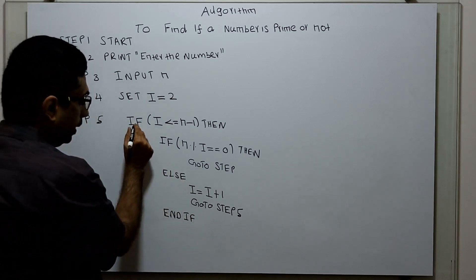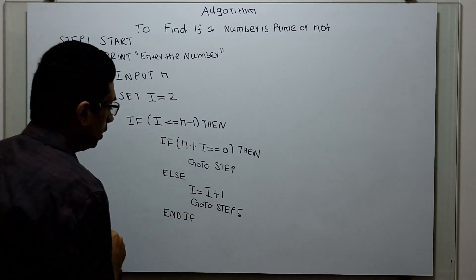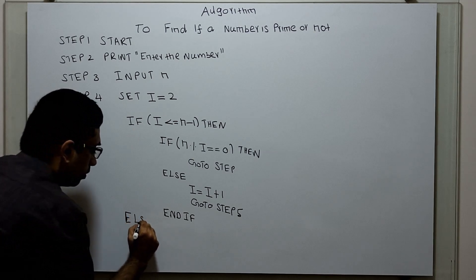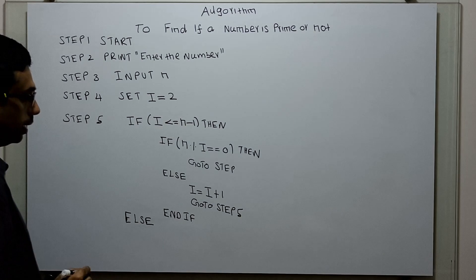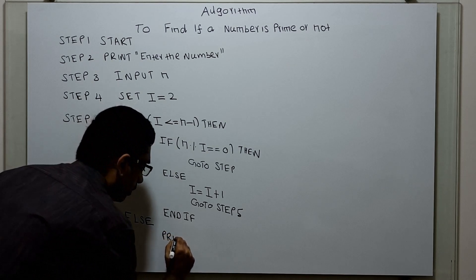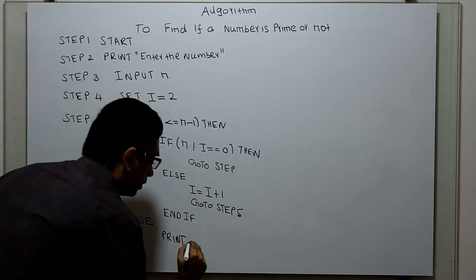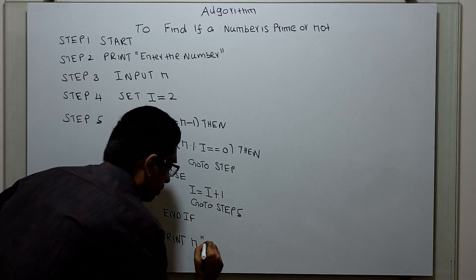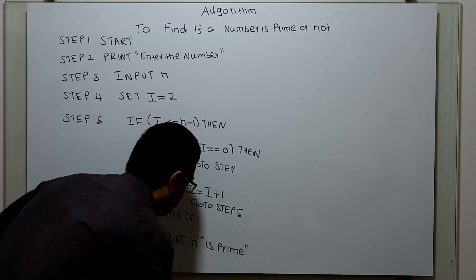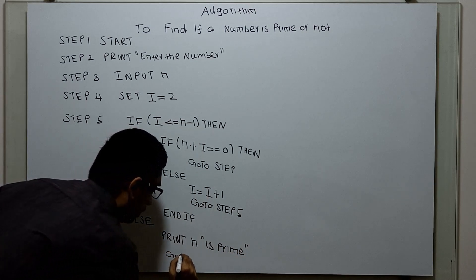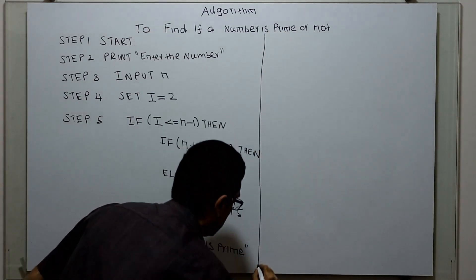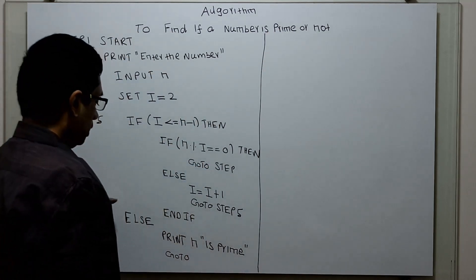For the outer if statement, I am writing an else here. If i is less than or equal to n minus 1 is false, I am printing: the number n is prime.